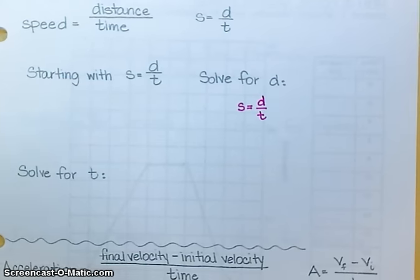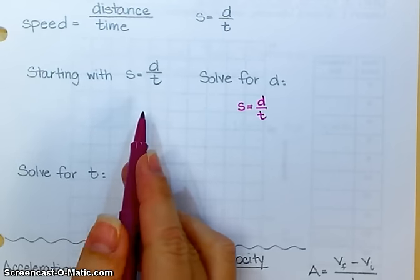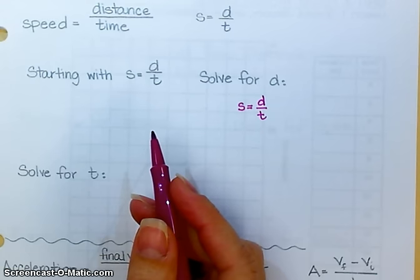Okay, if we start with this formula, speed is equal to distance divided by time. Remember your two rules for any algebraic equation that you want to rearrange.